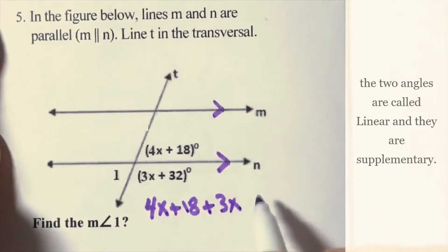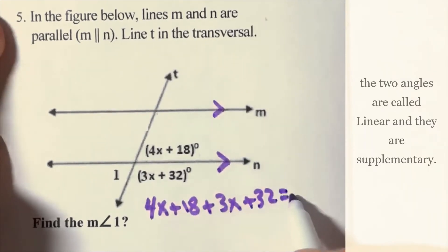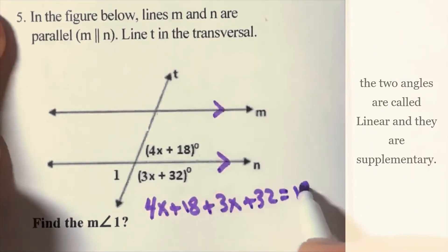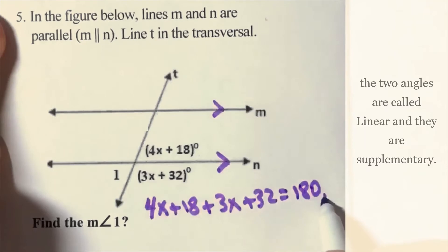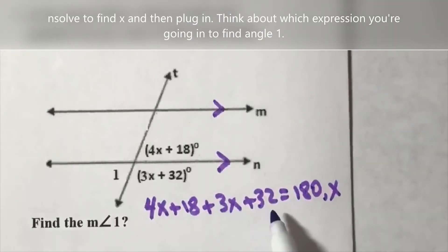...3x + 32, and set that equal to 180. Solving for x gives us x = 31.